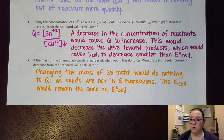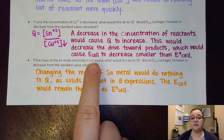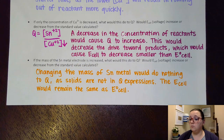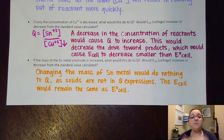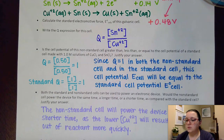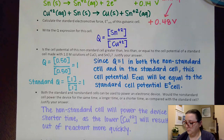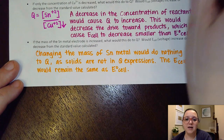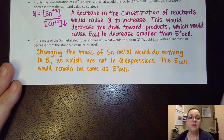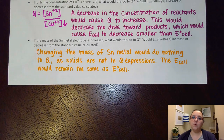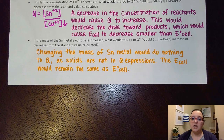Last, here's a trick question: if the mass of the tin metal electrode is increased, what would this do to Q? Think about the equation — we did not write solid tin metal in the Q expression. Solids are excluded from equilibrium expressions. So changing the mass of the tin metal does absolutely nothing to Q, and therefore the voltage of the cell would remain exactly the same. If it's not in the Q expression, it won't change the voltage.